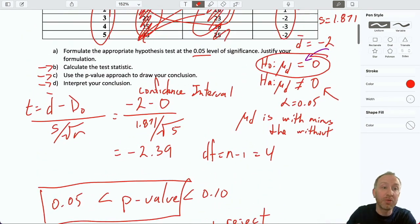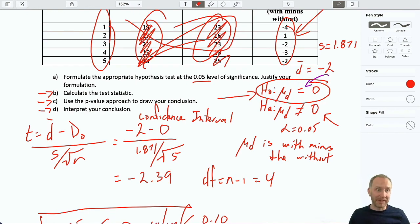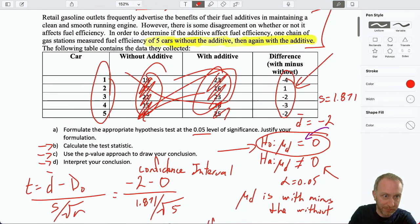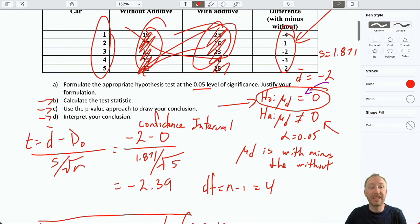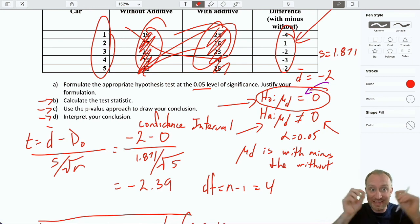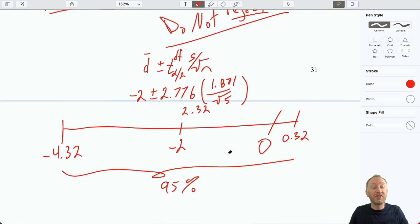Right? And so, again, when we don't reject the null, I'm not saying I have evidence to show that the average is 0. I'm saying I have insufficient evidence to show that it's not 0. Right? Our evidence does not support the alternative. Our evidence here doesn't say that it is equal to 0. It says I'm unable to say that it's different from 0. I know that sounds tedious and cumbersome. But when we look at that interval, I'm 95% confident that the true difference in fuel efficiency with and without the additive is between negative 4.32 and positive 3.2. The fact that our hypothesized value is possible, that is why we are unable to reject the null. I'm not saying it is 0. I'm saying I'm unable to say it's not 0.